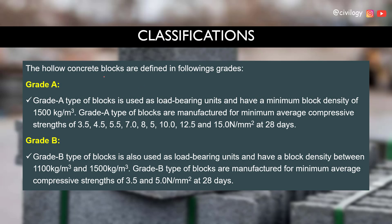Next we talk about classification. Hollow concrete blocks are defined in the following grades: Grade A and Grade B. Grade A blocks are used as load-bearing units and have a minimum block density of 1500 kg/m³. These blocks are manufactured for minimum average compressive strengths of 3.5, 4.5, 5.5, 7, 8.5, 10, 12.5, and 15 N/mm² at 28 days.